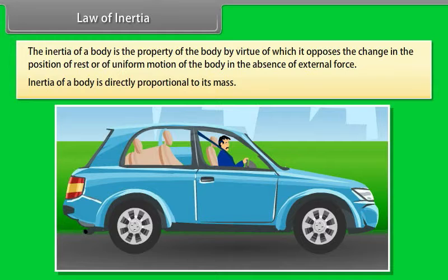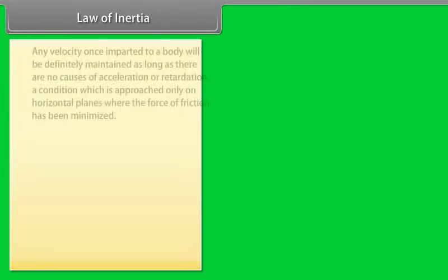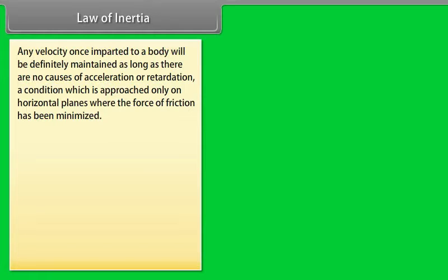Inertia of a body is directly proportional to its mass. Any velocity once imparted to a body will be maintained as long as there are no causes of acceleration or retardation — a condition approached only on horizontal planes where the force of friction has been minimized.